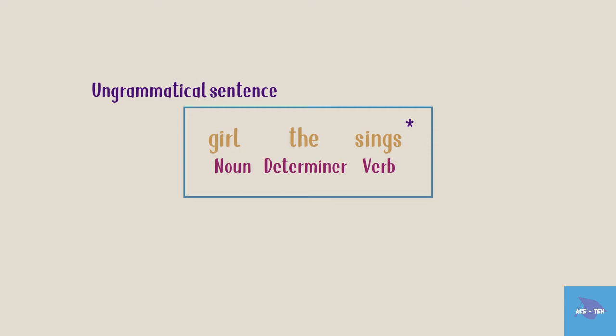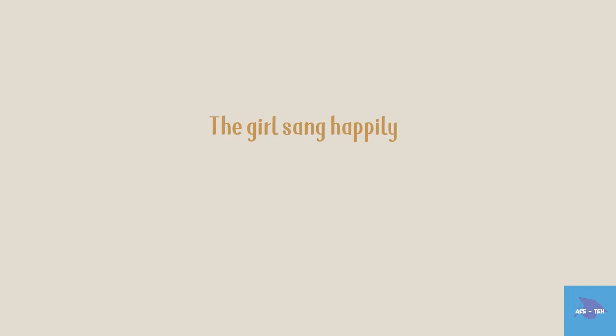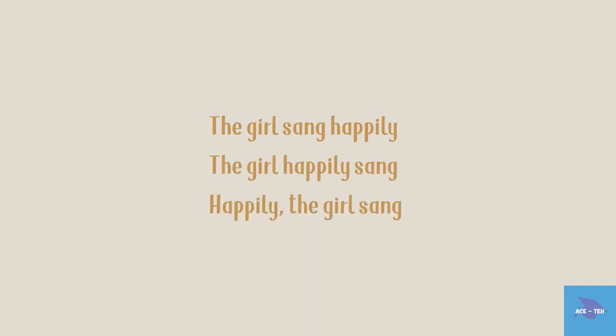An ungrammatical utterance is marked with an asterisk. Let's look at another sentence: 'The girl sang happily,' 'The girl happily sang,' and 'Happily the girl sang.' All these combinations are grammatical in English.